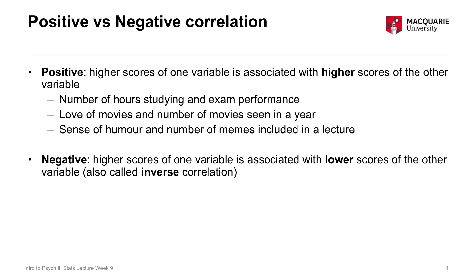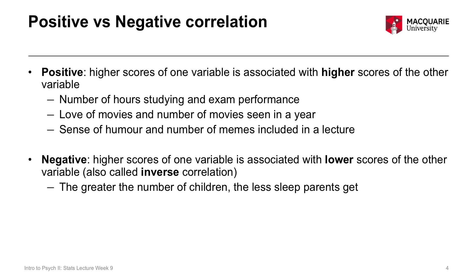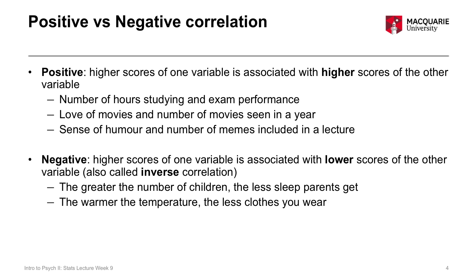Correlations can also be negative. A negative correlation means that higher scores on one variable are associated with lower scores on the other variable. Negative correlations are also called inverse correlations — they go in the opposite direction. For example, the greater the number of children parents have, the less sleep those parents get. Or, the warmer the temperature, the fewer clothes you wear — higher scores on temperature correspond with lower scores on the clothes-wearing variable.